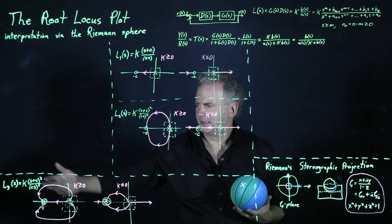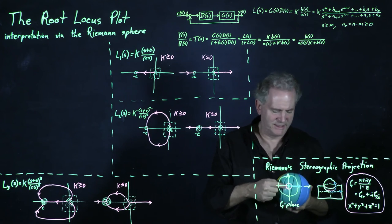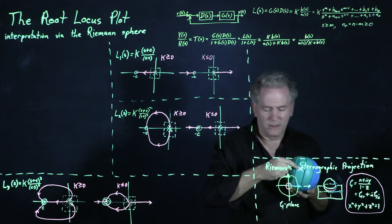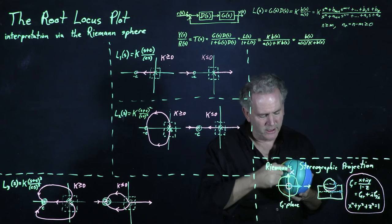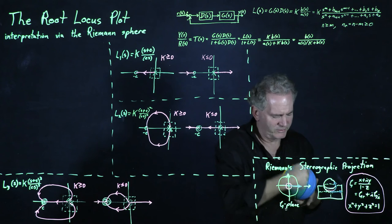And again, in the limit in the l3 of s case, as we move this point minus c up to infinity, in the k positive case, we have three branches, one that comes up directly along that longitude line, one that's a rubber band that comes over here, one that comes over there.